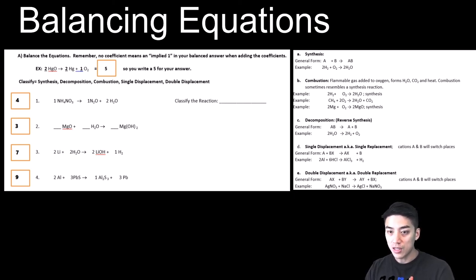And just keep in mind, like in problem number 2 there, the sum of coefficients is actually 3, even though there's no coefficients in front of any of those elements or those formulas, like MgO plus H2O yields Mg(OH)2, magnesium hydroxide. So if there are no coefficients in front, it's always implied to be a 1. So that's why the sum there is 3.